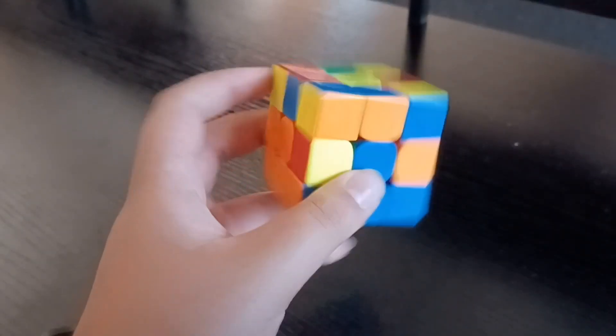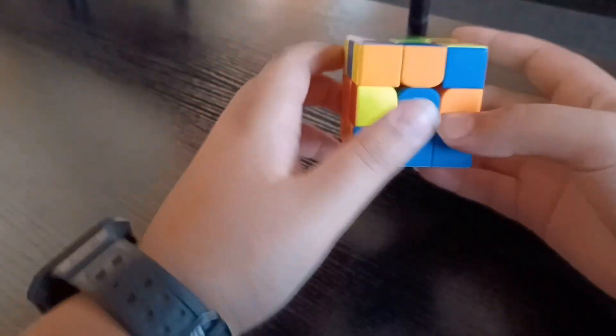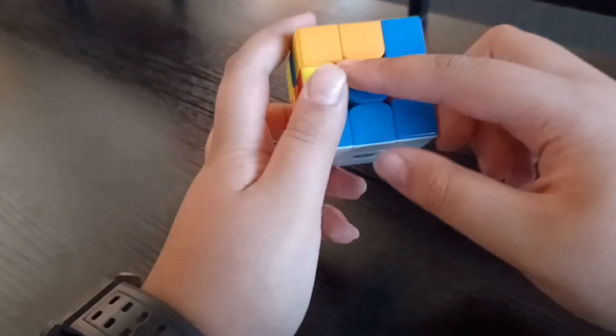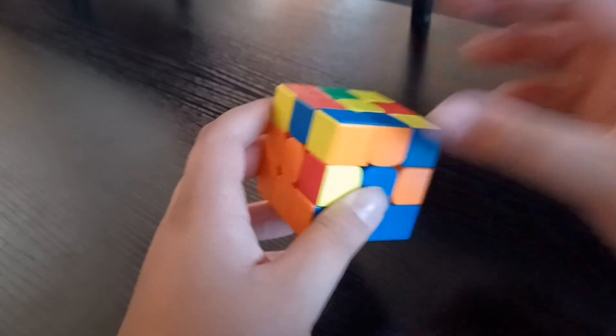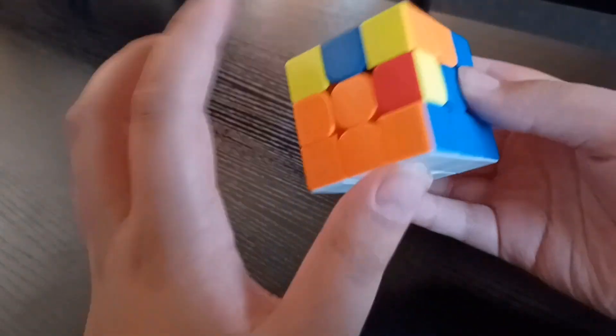Okay so this is what you're supposed to do to put the edges in. So let's see here, we have blue and red and I'm gonna find the blue and red edge piece. Remember these are edge pieces when they have two colors on them and here it is.